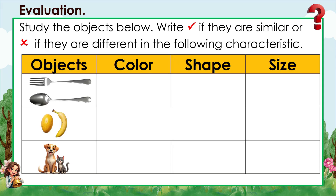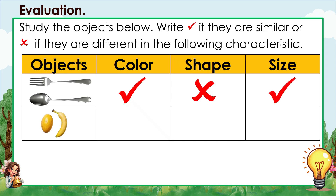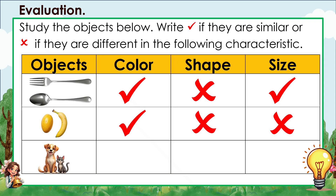Evaluation: Study the objects below. Put a check if they are similar or a cross if they are different in the following characteristics. Spoon and fork — same color? Yes! Same shape? No — one is oval, one is pointy. Same size? Yes! Mango and banana — same color? Yes! Same shape? No! Same size? No! Dog and cat — same color? No! Same shape? No! Same size? No!